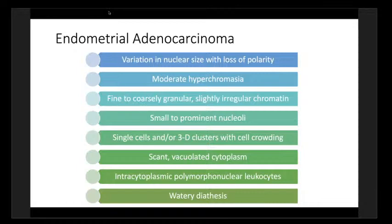For endometrial adenocarcinoma, nuclear size varies — more changes and some loss of polarity. Hyperchromasia can be present, and we sometimes also see hypochromasia. Chromatin is fine to coarse. We see nucleoli, single cells, and 3D clusters with crowding. Vacuolated cytoplasm is helpful to identify. Intracytoplasmic polymorphonuclear leukocytes — polybags — and watery diathesis are also important features. Full disclosure: recognizing watery diathesis took me at least five years as a cytotech.